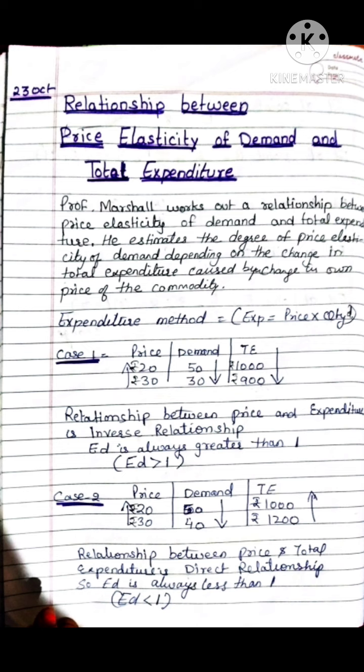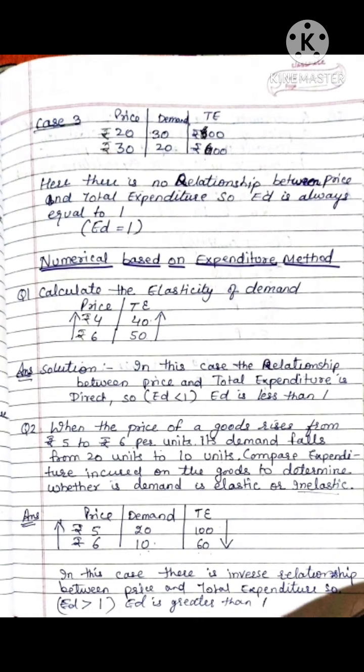Case 2: If the price increases from 20 to 30 rupees, demand decreases from 50 to 40. Total expenditure: 20 × 50 = 1000, and 30 × 40 = 1200. Expenditure increases. Both price and total expenditure are increasing, so there is a direct relationship between price and total expenditure. ED is always less than 1 in this case.